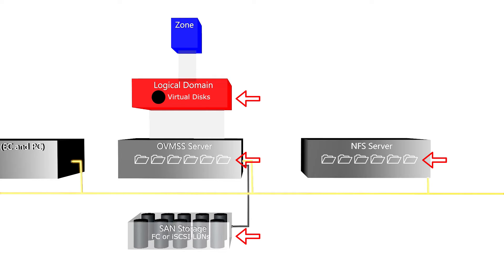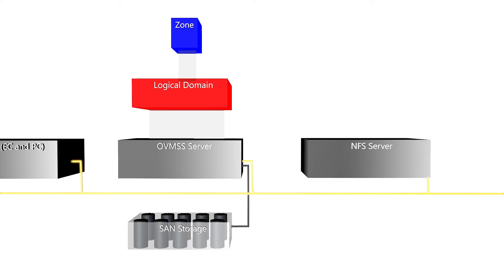For an IO or root domain, you can also use direct IO disks belonging to the IO or root domain. For the metadata, you can use NAS storage or the local file system.